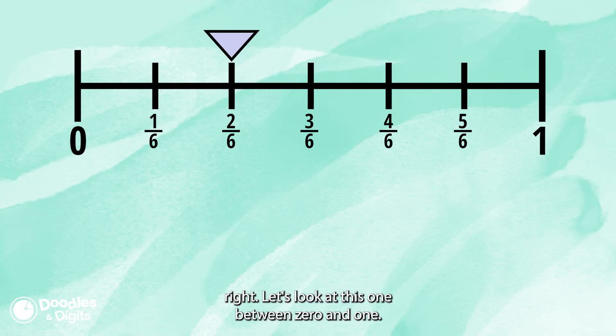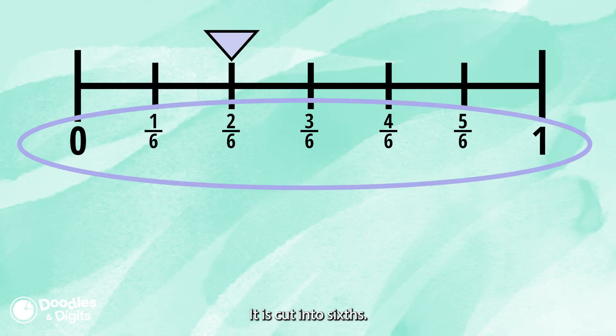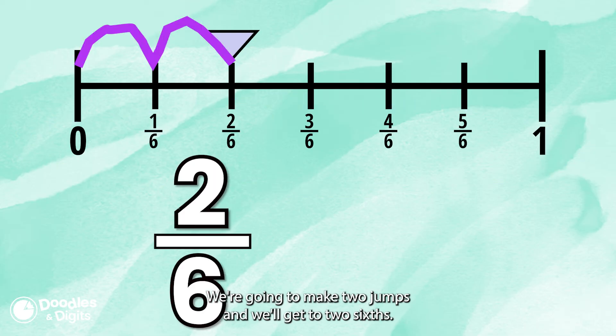Alright, let's look at this one. Between zero and one, it is cut into sixths. So now we're going to see where the arrow is. We're going to make two jumps and we'll get to two sixths.